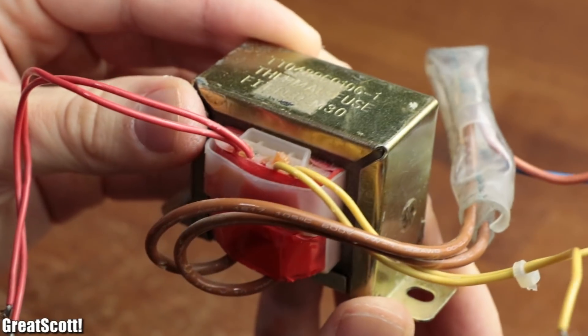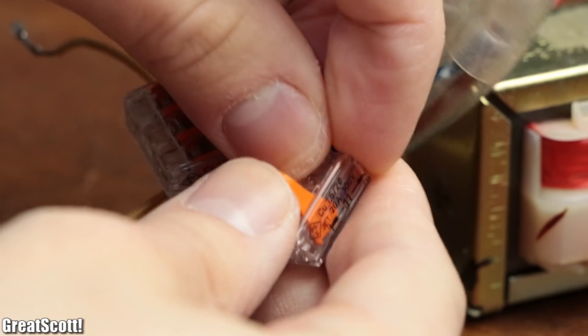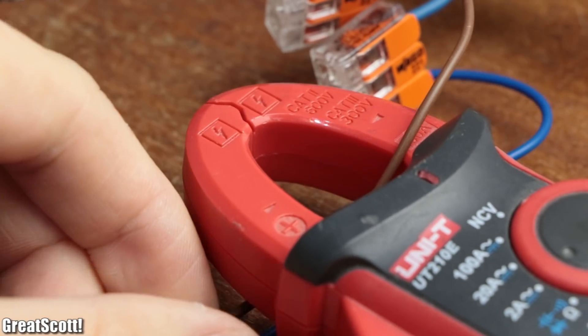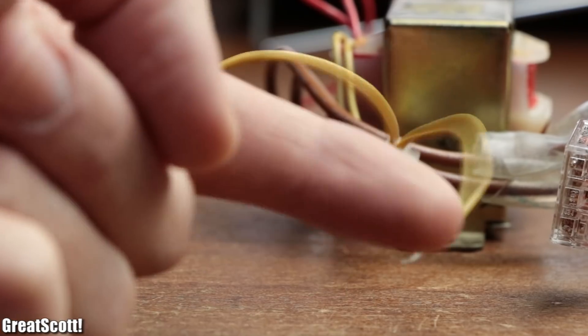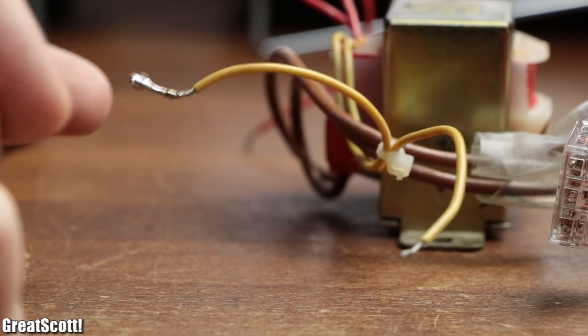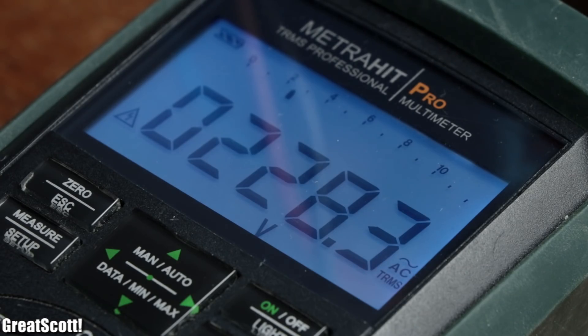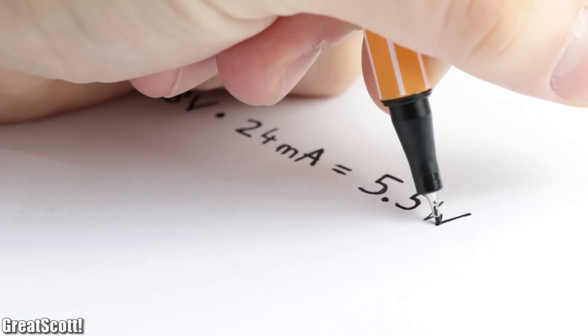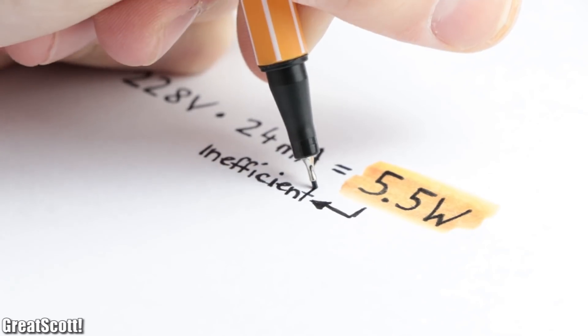Let's start with a classical example for reactive power, the transformer. When I hooked up my first transformer to the power grid I was shocked to find out that it drew quite a lot of current on the input without even featuring a power-drawing load on the output. This example features a voltage of 228 volts and a current of 24 milliamps on the input, which would equal a power of around 5.5 watts that would get turned into heat. That would be quite inefficient.